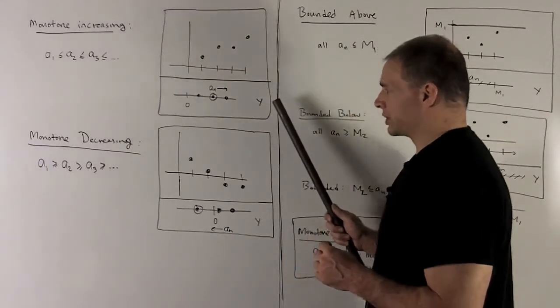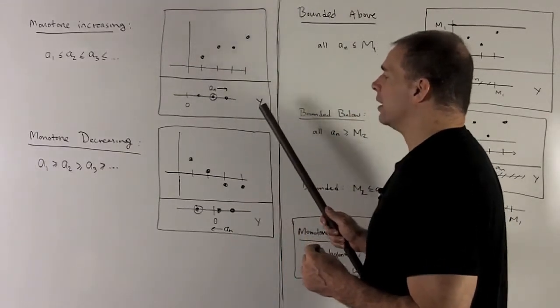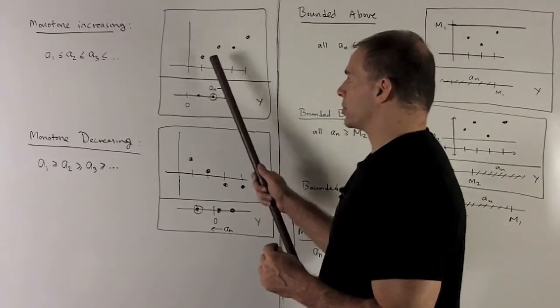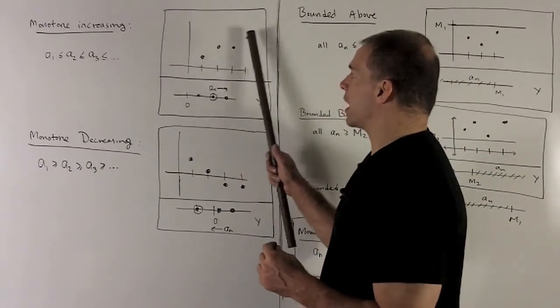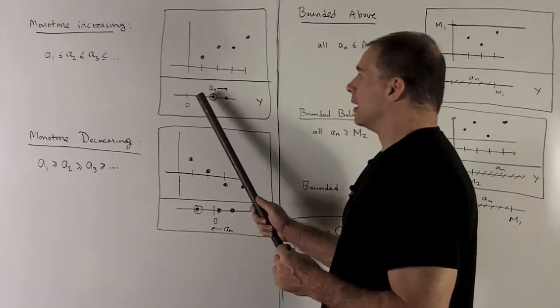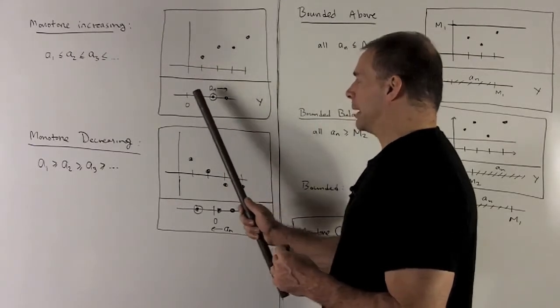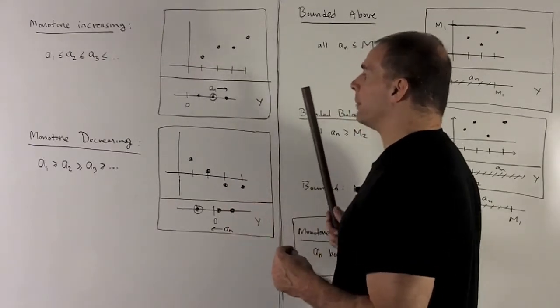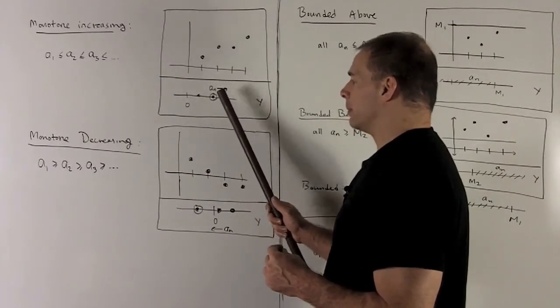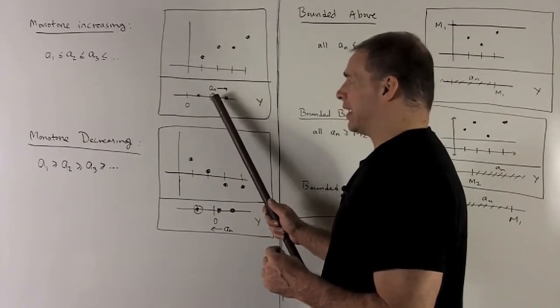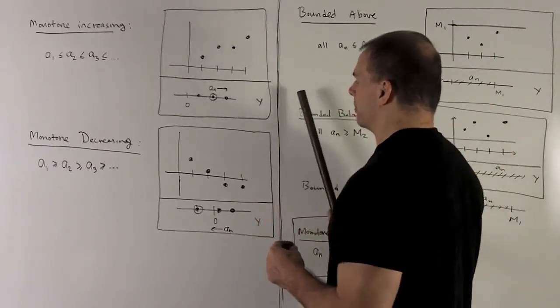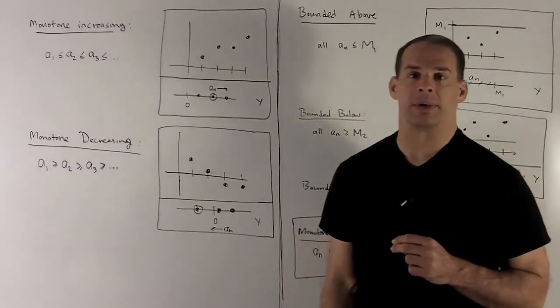If I go to this picture where we have the y-axis on its side, where we just plot the values, so it's like I'm projecting over in that direction, then what's happening? This monotone increasing is just going to mean we're always moving to the right. We can stop, pick up a few points landing on the same point, but then it has to keep continuing to the right if it doesn't stop there completely.